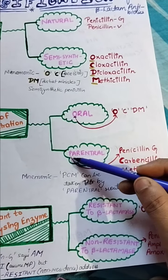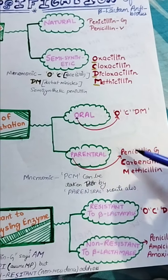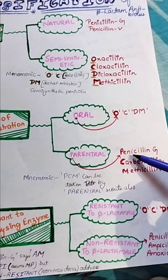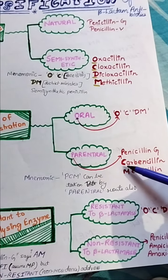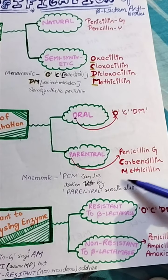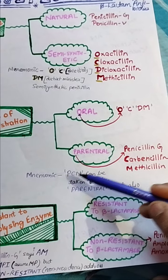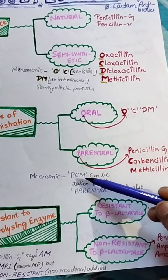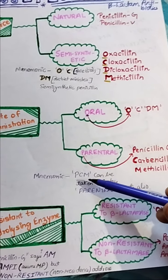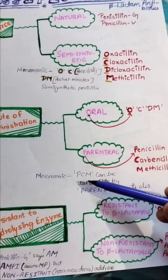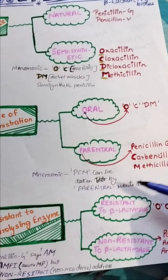For parenteral route, the same phenomenon applies. P stands for penicillin G, C for carbencillin, and M for methicillin. We can remember this through the mnemonic PCM — like paracetamol — meaning PCM can be taken by the parenteral route as well.